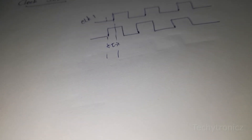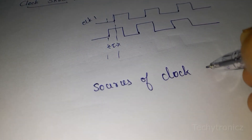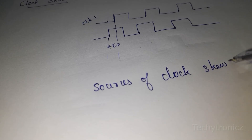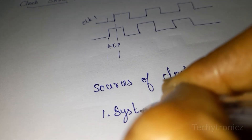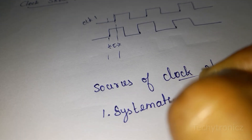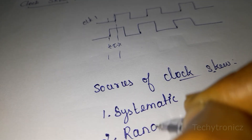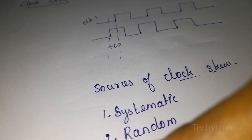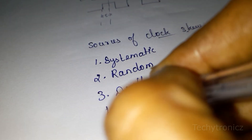There are four sources of clock skew. The first one is systematic, the second one is random, the third one is drift, and the fourth one is jitter.